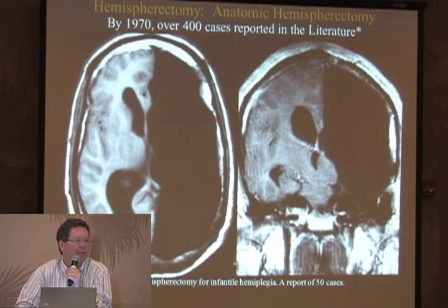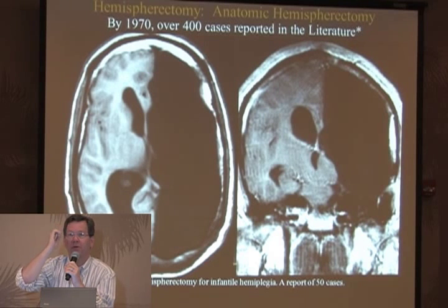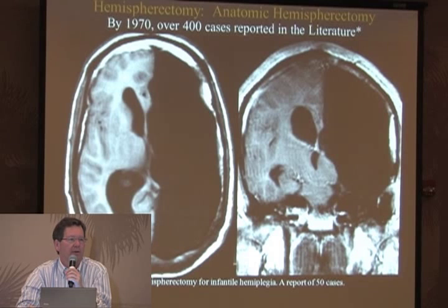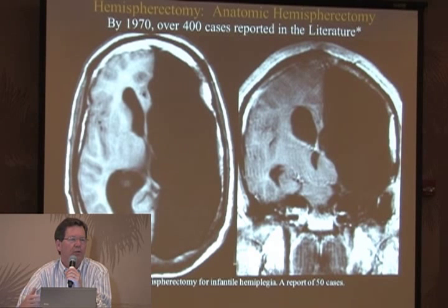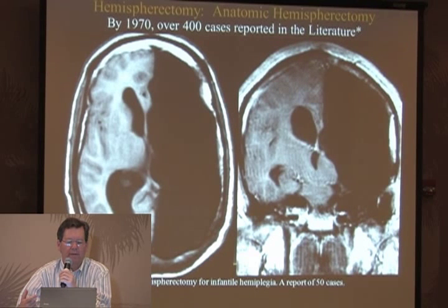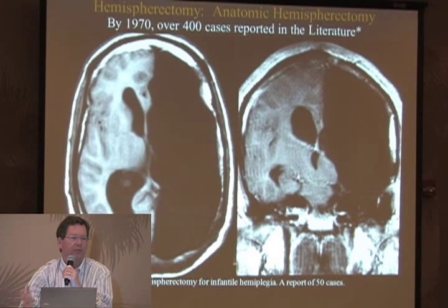The first reported series of hemispherectomies for seizure control was by a South African named Cranow, published in the early 1950s. His patients were primarily adults who, as children, had had perinatal infarcts and suffered seizures for many years. This showed the possibility of hemispherectomy for epilepsy in individuals with atrophic brains or strokes. By 1970, about 400 cases had been reported in the literature reviewed by Wilson et al., performing this traditional anatomic hemispherectomy where the craniotomy went all the way across and everything was taken out.